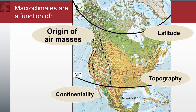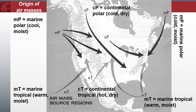We begin by looking at the origin of air masses. Developed in 1930, the Bergeron classification is the most widely accepted form of air mass classification, though others have produced more refined versions since then. Air masses are commonly classified according to four basic source regions with respect to latitude: Polar, Arctic, Equatorial, and Tropical. The prefix to these source regions tells us where these energies initiate — M is for maritime, C for continental.